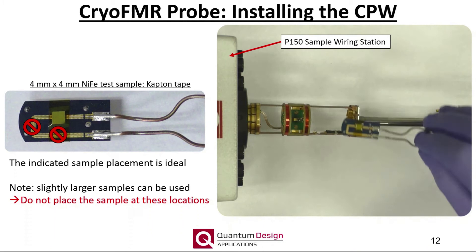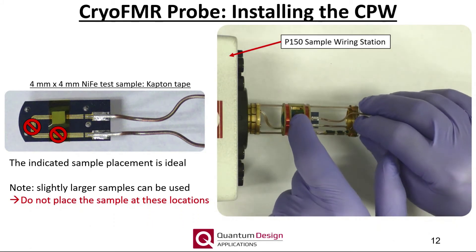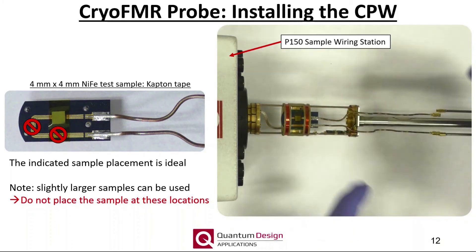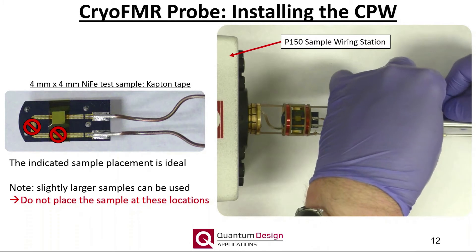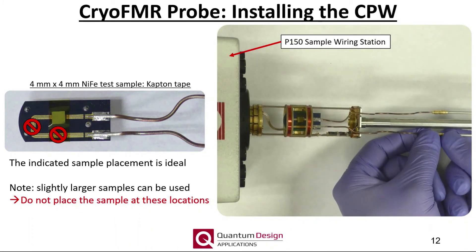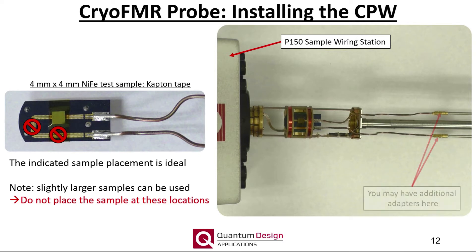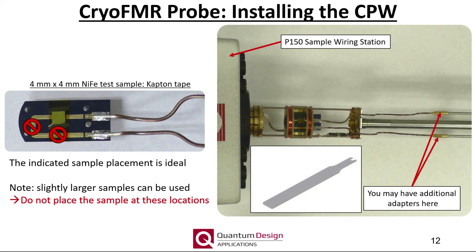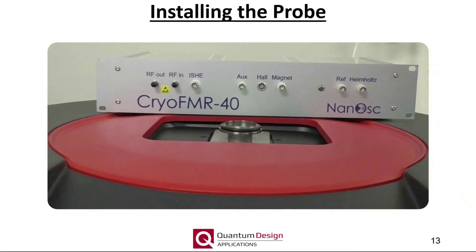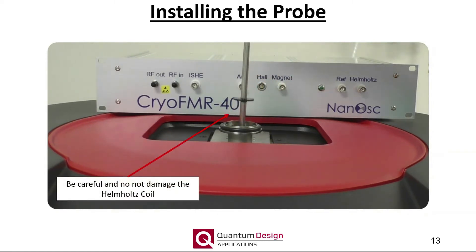Gently insert the 4 alignment pins in the coplanar waveguide into the sample platform of the cryo-FMR probe, as shown. Once firmly in place, connect the two SMPM connections, and then give all of the connections a double check. Note, depending on the vintage of your coplanar waveguides, there may be an additional adapter located here. To disconnect these SMPM connections, feel free to use the included tool, shown here, to gently pry the connections apart. With the coplanar waveguide in place, the cryo-FMR probe can be installed within the PPMS, more specifically the Dynacool, as I show here. Be careful not to catch the Helmholtz coils at the top of the sample chamber, as this can damage them.